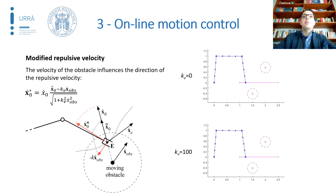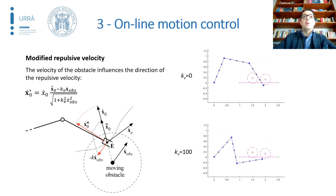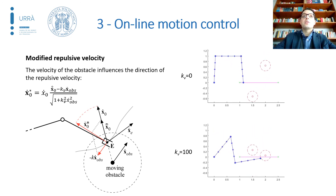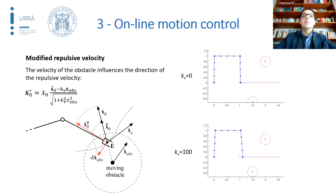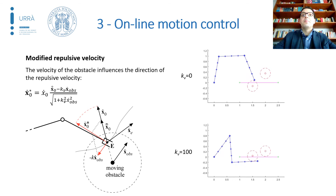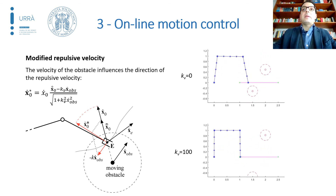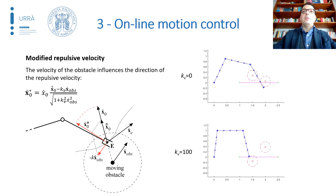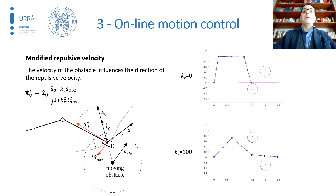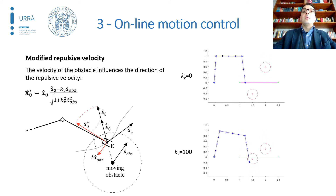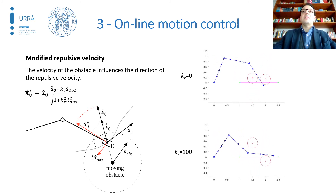In order to improve the reaction of the control to obstacles that are moving, a modification to the repulsive velocity vector is introduced. As shown in the picture by the red arrows, the direction is changed by a vector that is opposed to the obstacle velocity. The result is shown in two animations. The modified repulsive velocity is applied only in the bottom one, where the robot is able to avoid the moving obstacles taking into account their velocities, whereas on the top, the task is failed.